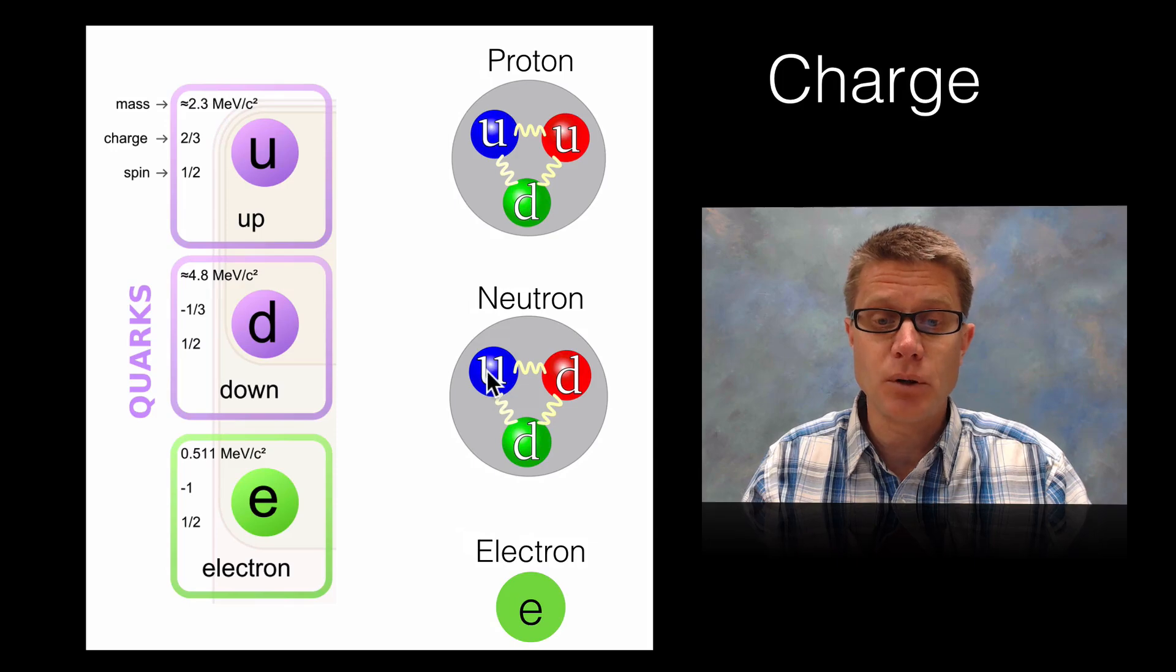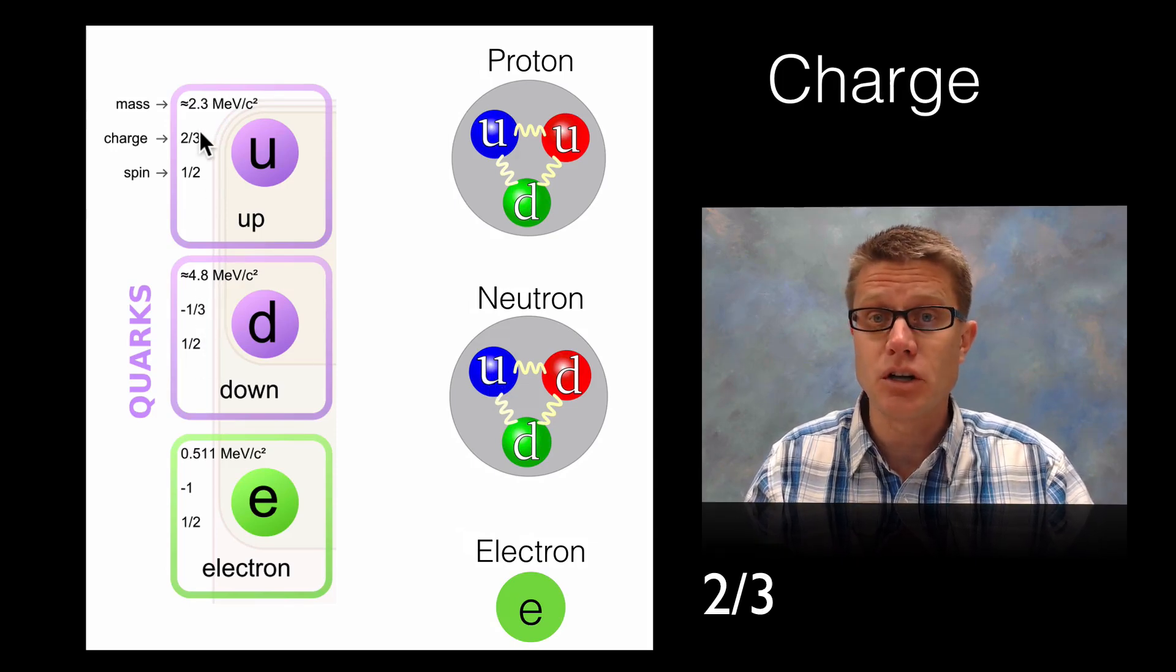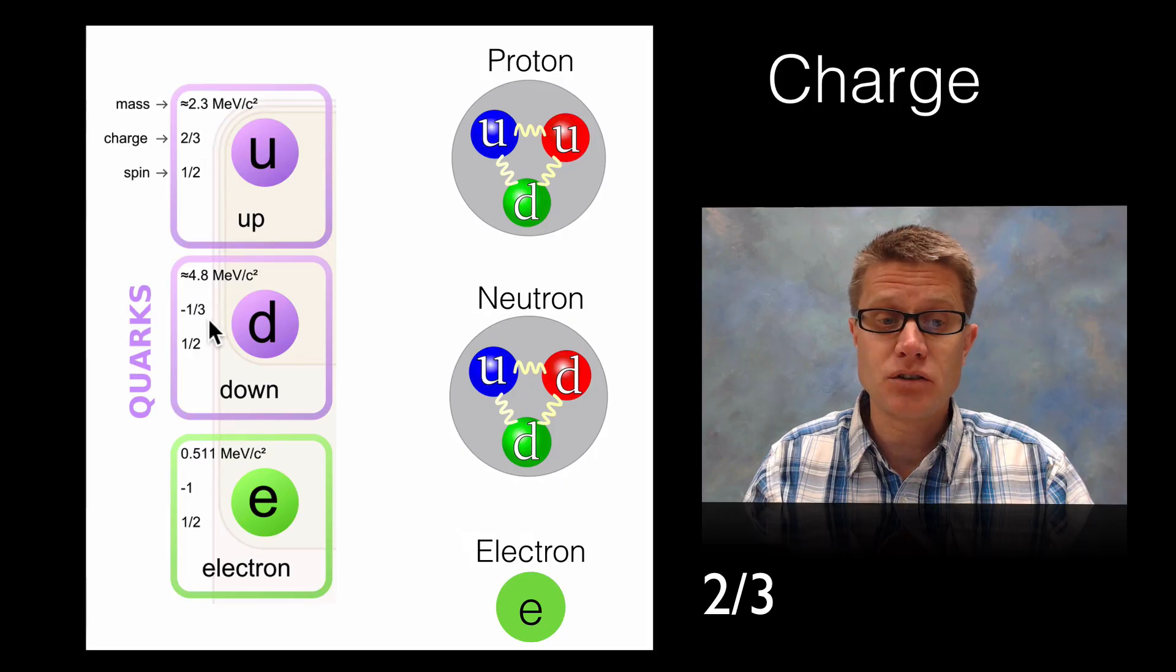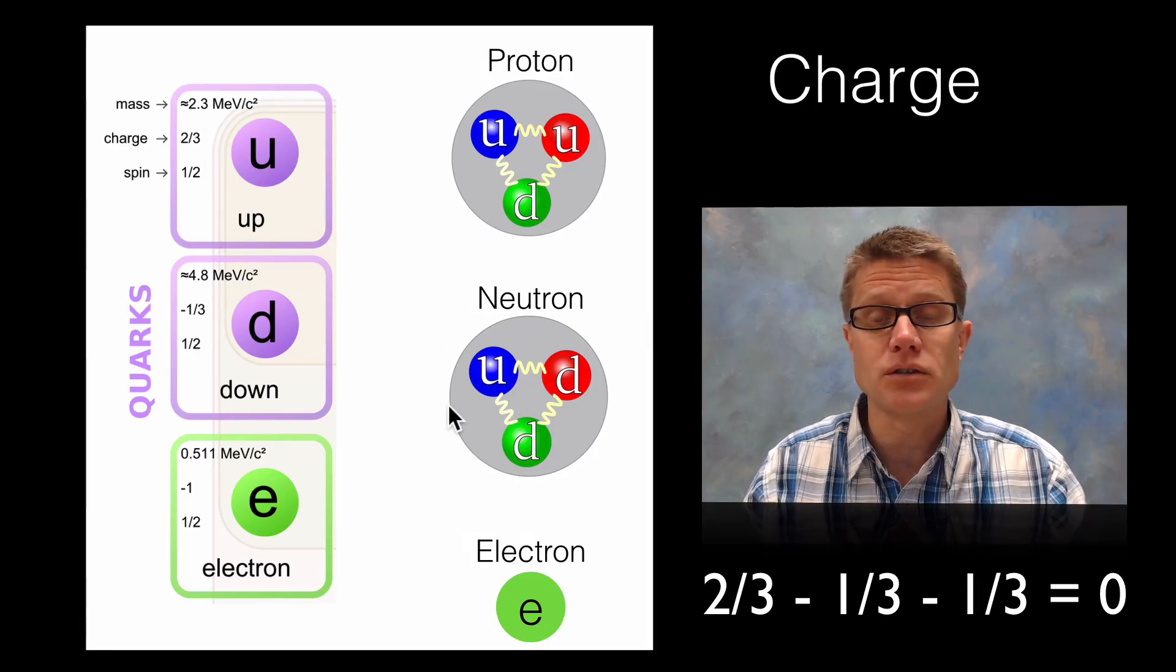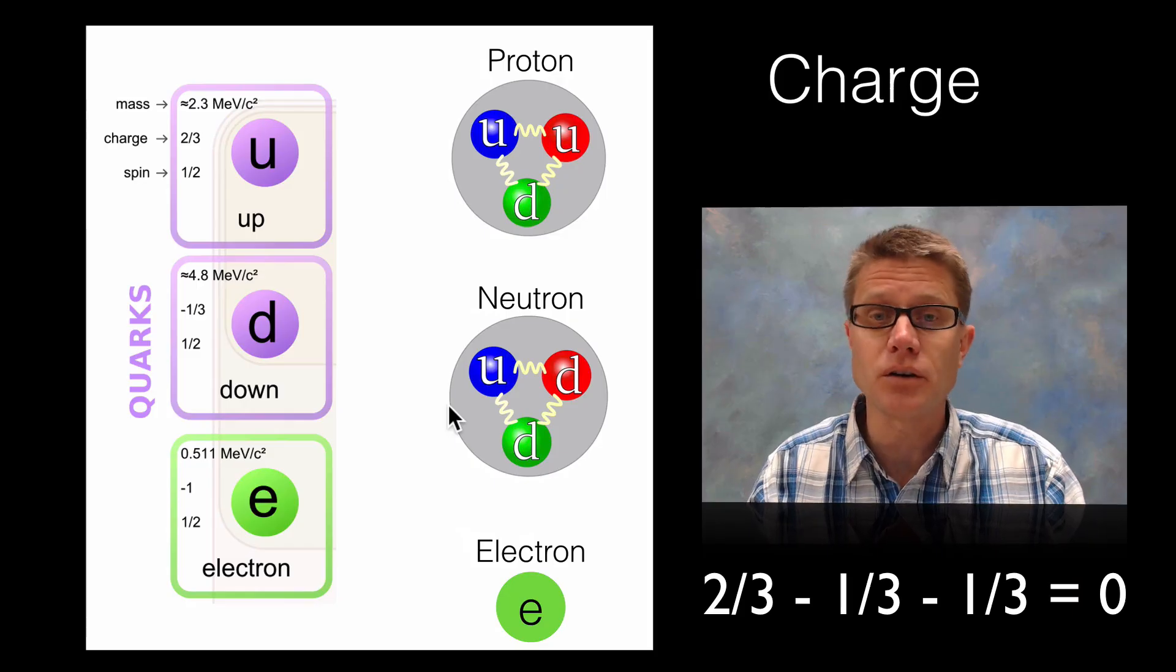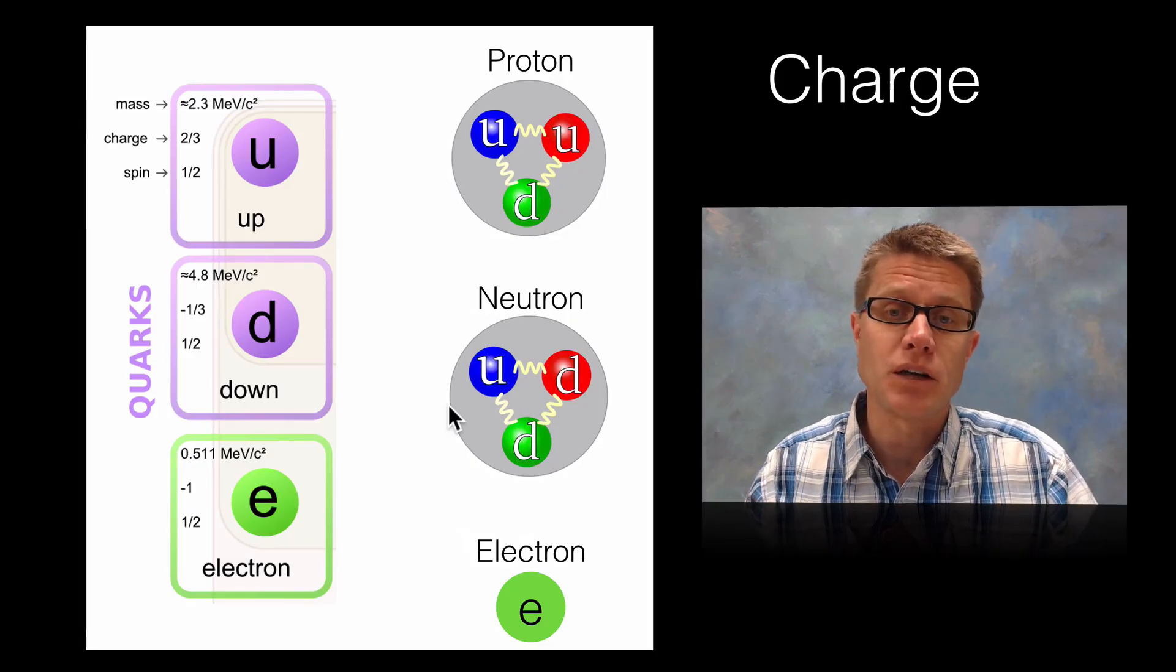If we are looking at the neutron for example, that is 1 up which is going to be 1 2/3 charge, positive charge, minus 2 1/3 down charges. And so that is why a neutron has no charge. And so if we are trying to figure out the charge of these particles then the fundamental particles become important.